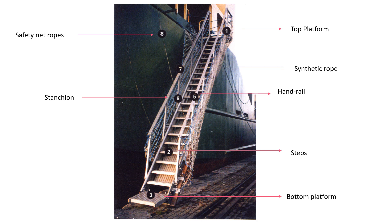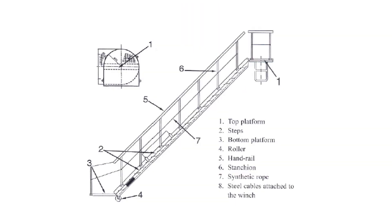On the jetty or quay, the accommodation ladder rests on a roller at the bottom of the stairs. This roller allows the accommodation ladder to slide on the jetty as a result of changes in draft or movements of the ship. Lowering and lifting of the accommodation ladder is done by a winch.